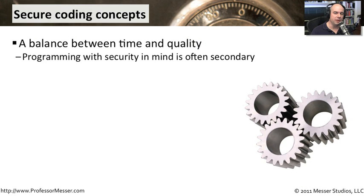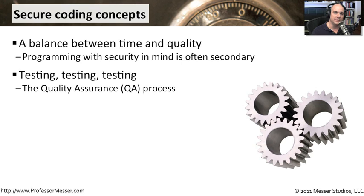If you're developing or writing your own software, there are a number of concepts you have to keep in mind to make sure that your code is going to be secure. One of the challenges you have, though, is the process and the time it takes to make that secure is going to extend your development cycle. So you often have this balancing act between speed and security. When you're working with your code, you want to be sure it is as secure as possible. There's usually a quality assurance process — you have somebody test your code, and it's often many types of tests to make sure you're doing the right things.